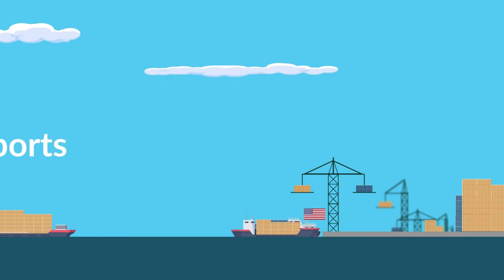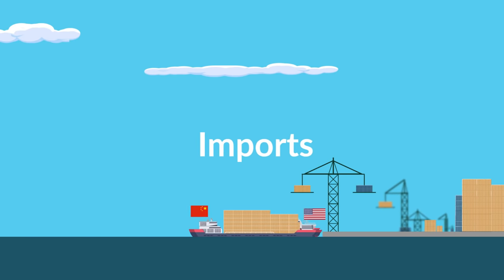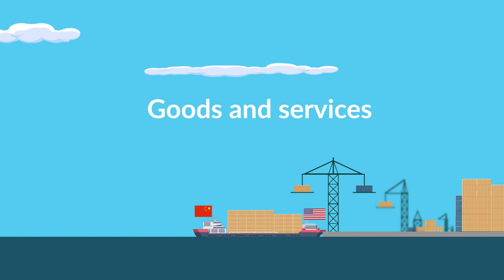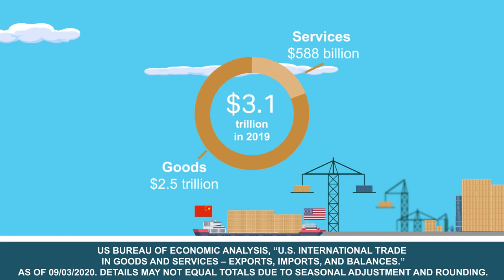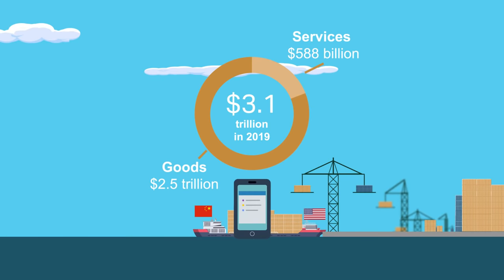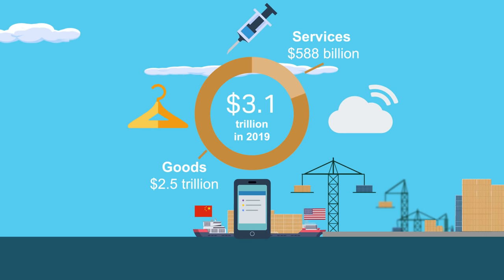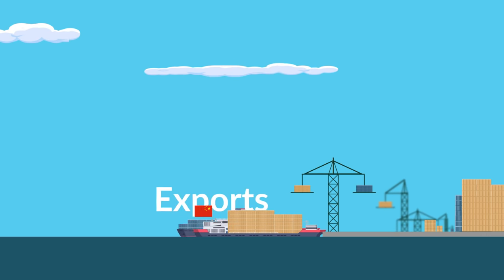One side of the trade equation is imports — goods and services brought into a country from abroad. In 2019, the United States brought in about $3.1 trillion worth of imports, everything from electronics and apparel to computer services and medical equipment. About 80% of that amount was goods, and the remainder was services.